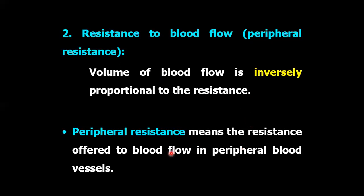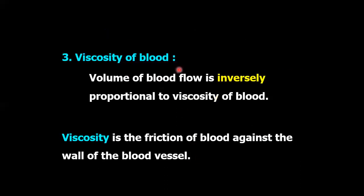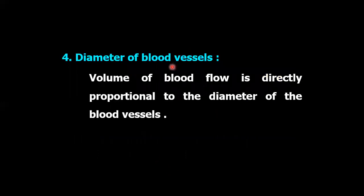The volume of blood flow is inversely proportional to the viscosity of blood — if blood viscosity is increased, then blood flow is decreased. We have already known that blood viscosity is increased during polycythemia or any kind of dehydration. Viscosity is the friction of blood against the wall of the blood vessels. The volume of blood flow is directly proportional to the diameter of the blood vessels — if diameter is increased, blood flow is increased; if diameter is decreased, blood flow is decreased. We already know that during atherosclerosis the blood vessels become narrowed and blood flow is decreased.